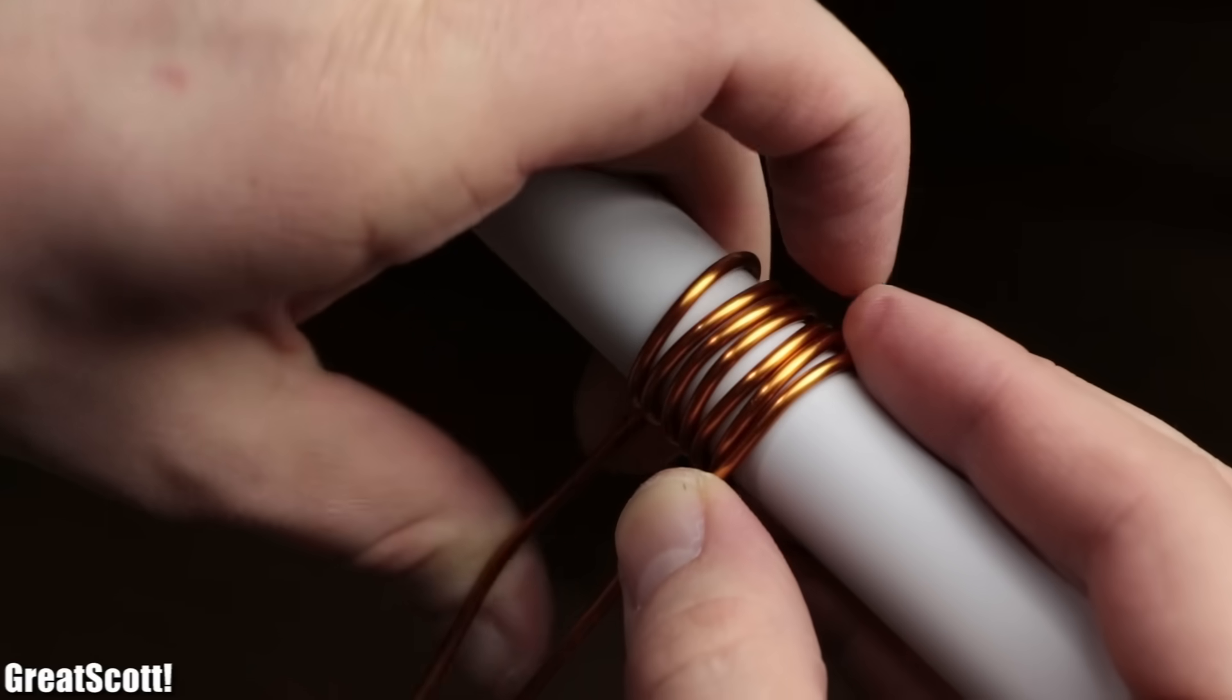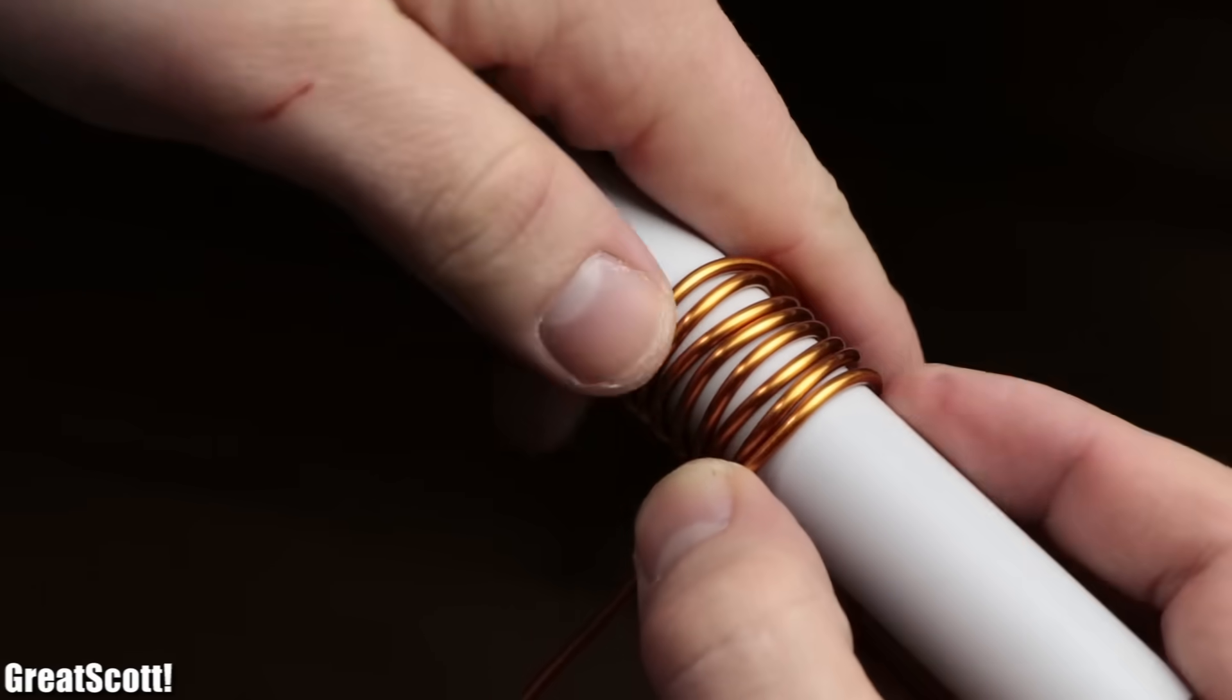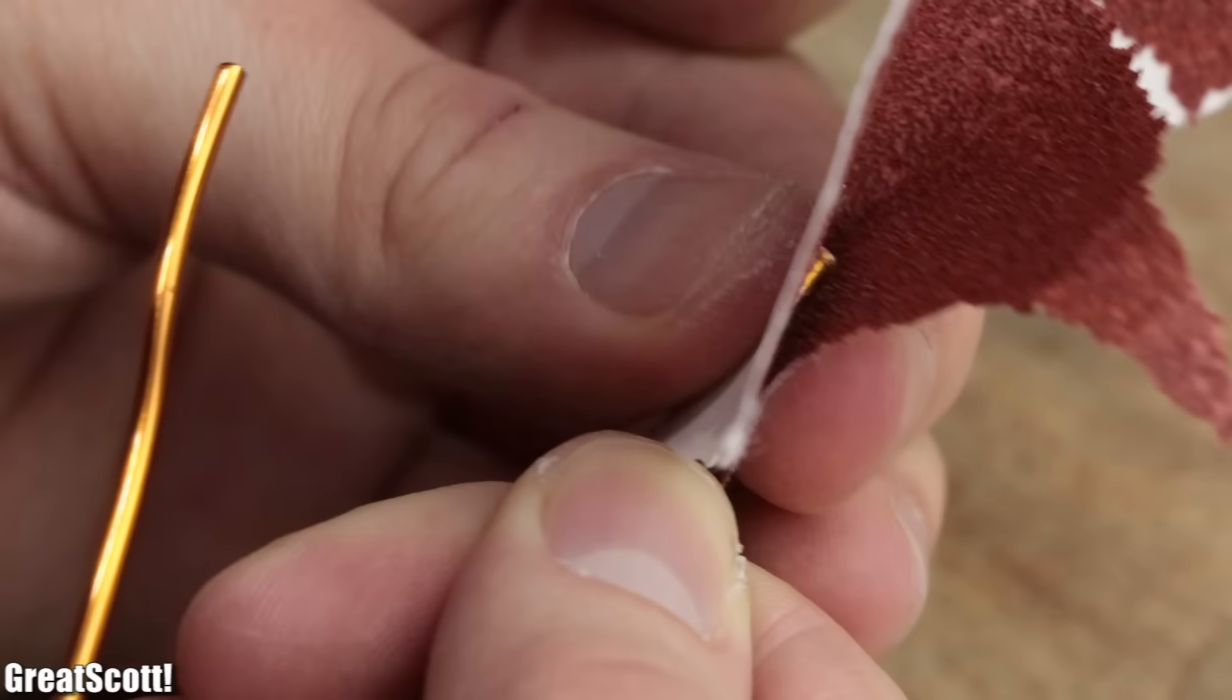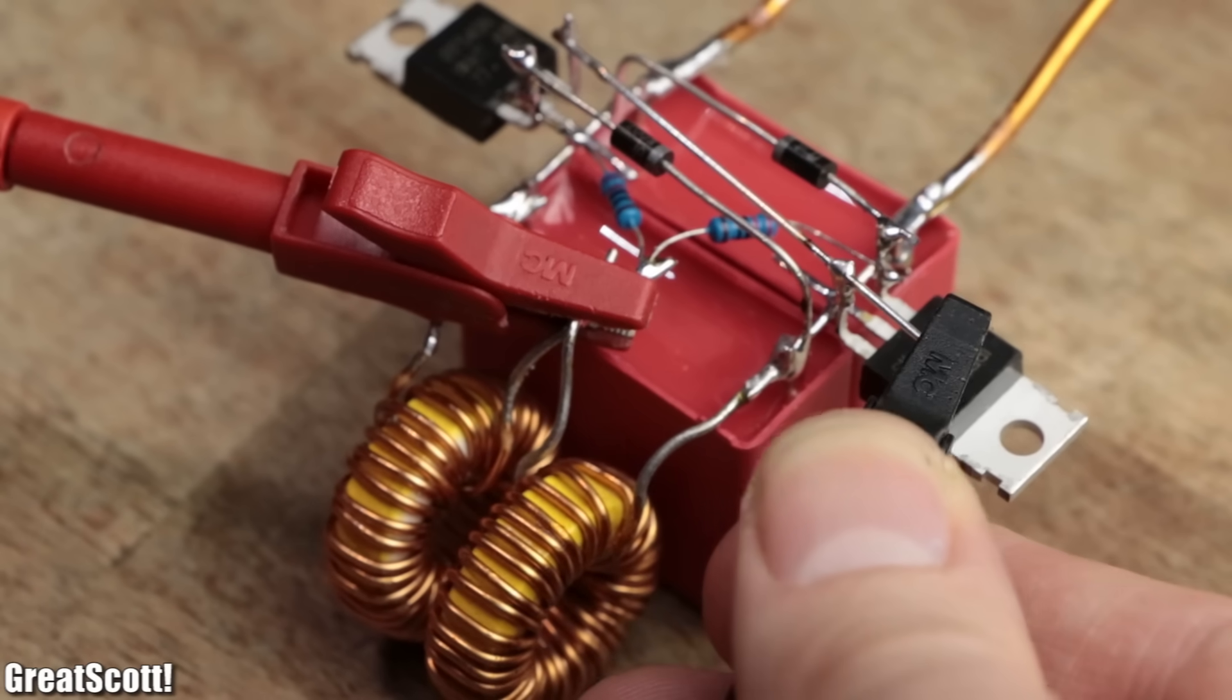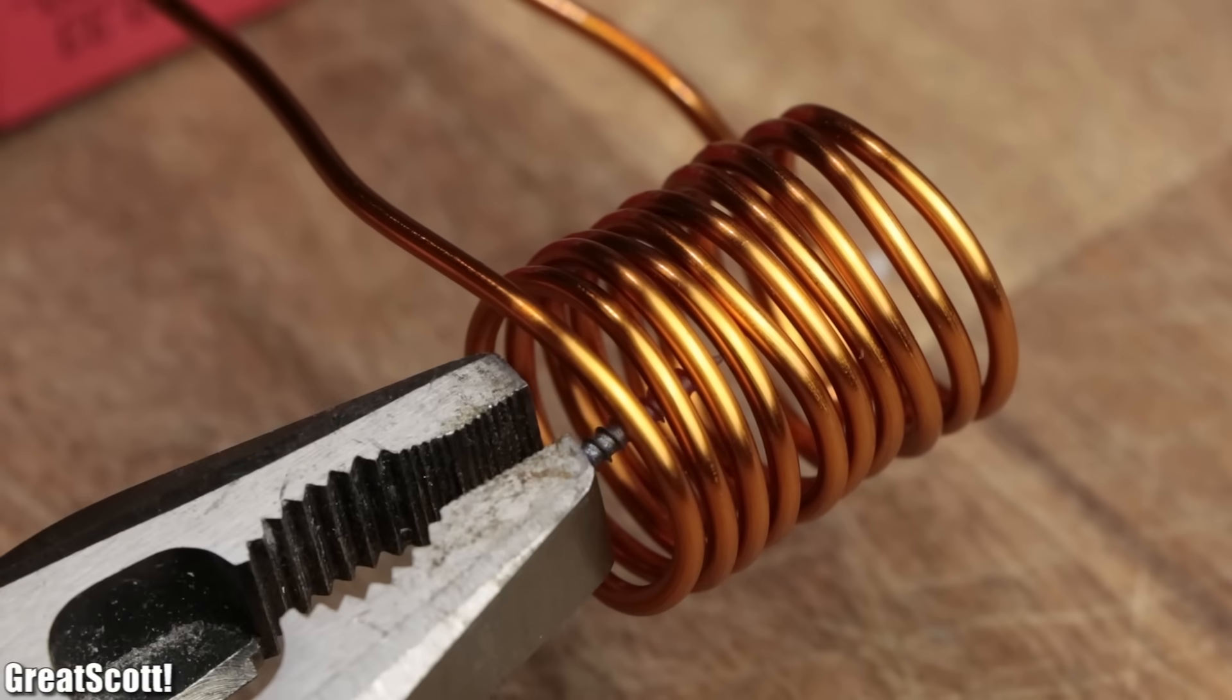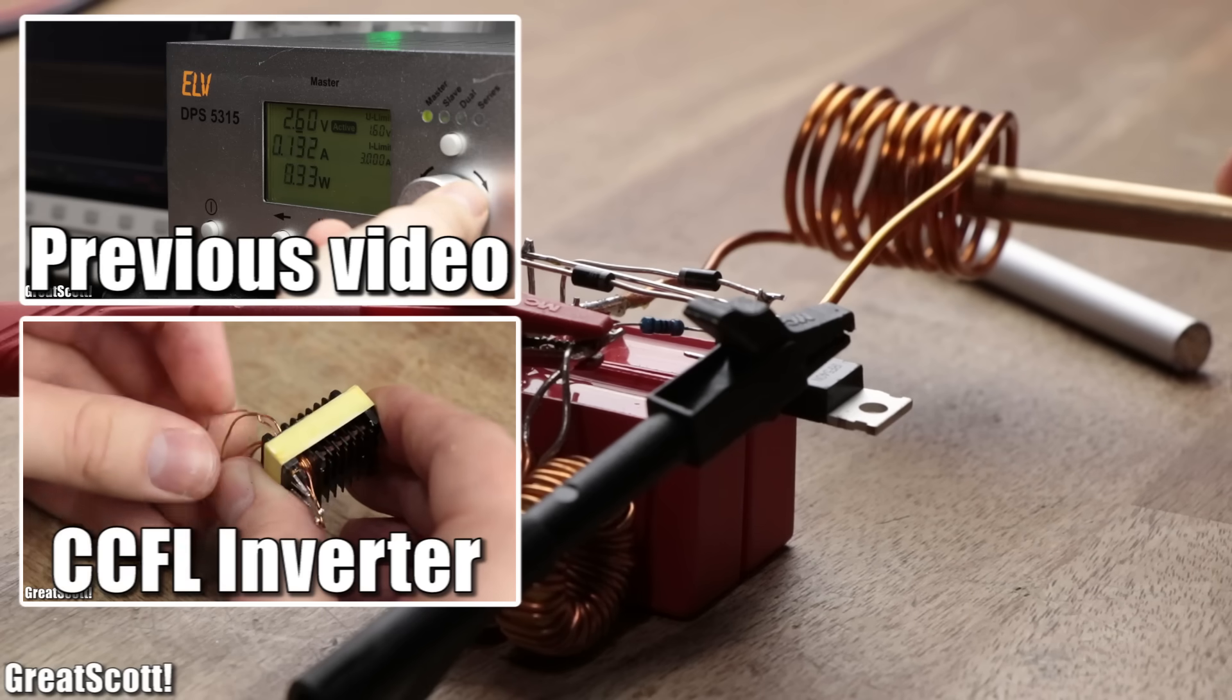The last mandatory component is the coil itself. For that I used 2 millimeter thick enamel copper wire which I wound around a 20 millimeter plastic pipe for around 10 turns. After removing the insulation from its ends, soldering them to the circuit and powering it all up, we successfully created our own induction heater that can transfer enough energy to let metal glow red.